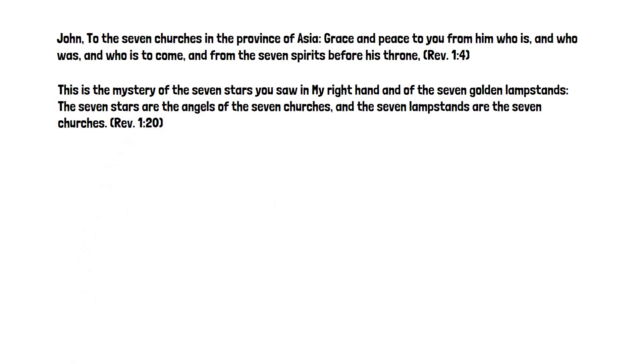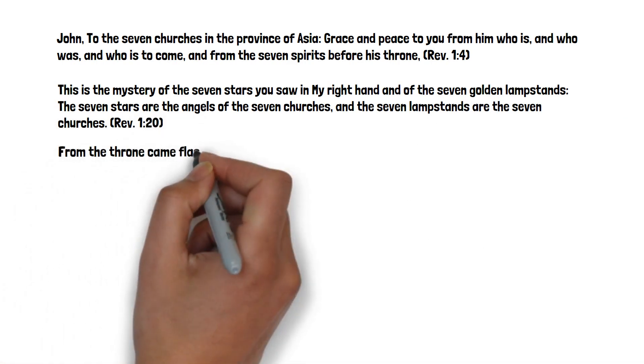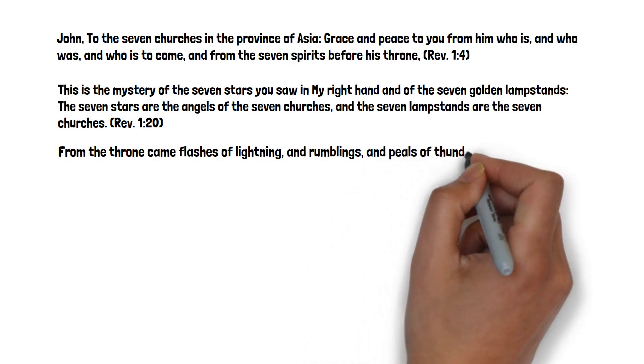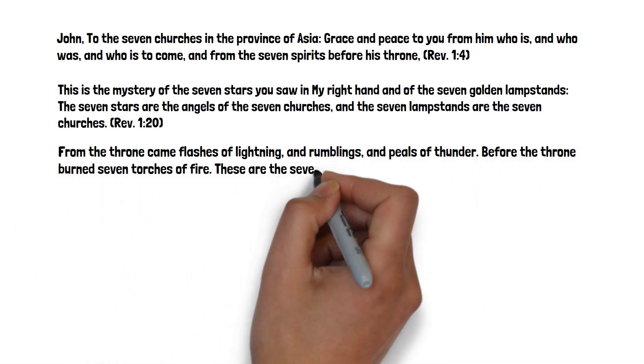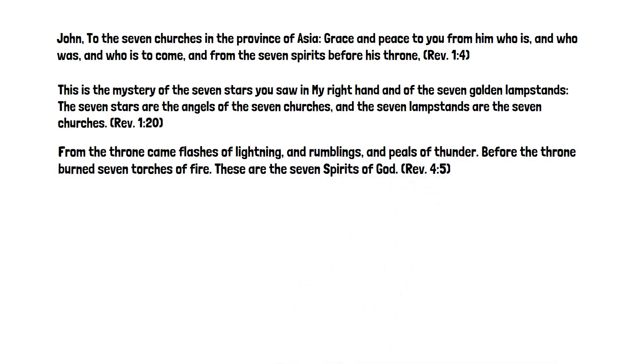And finally, Revelation 4:5 says, from the throne came flashes of lightning and rumblings and peals of thunder. Before the throne burned seven torches of fire. These are the seven spirits of God.